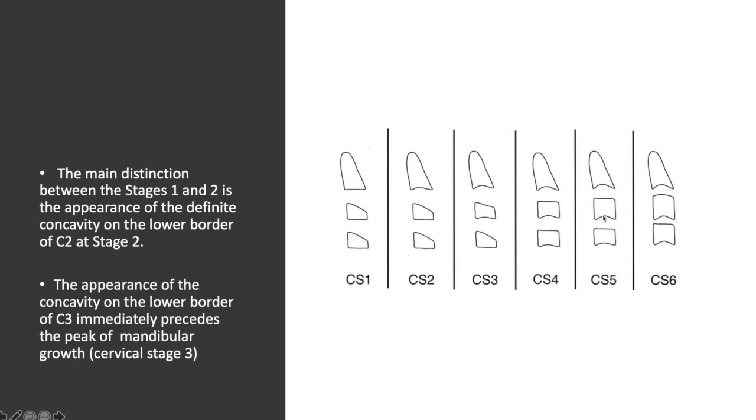Stage five: the concavities are present on all of them, and at least one of either C3 or C4 is still rectangular horizontal. Stage six: all of them have concavities and one of them is already vertical in shape and the other is rectangular vertical. This is applicable to growth prediction. If we see a patient having these features, it means the patient has already had its growth spurt two years before this stage.